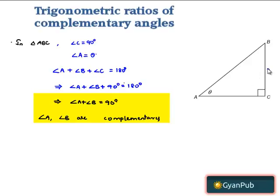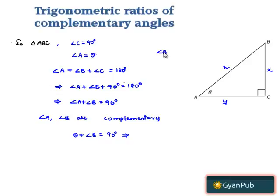Now let us name BC as X, AC as Y, and AB as R. Since angle A plus angle B equals 90 degrees, substituting angle A as theta gives angle B equal to 90 degrees minus theta. So here we have angle B as phi, which is also an acute angle.